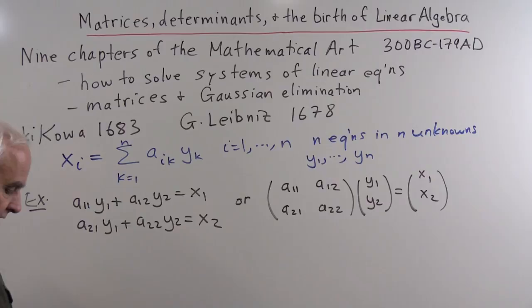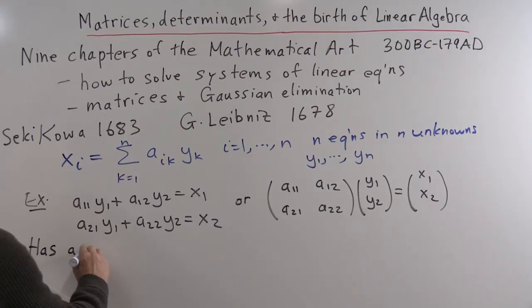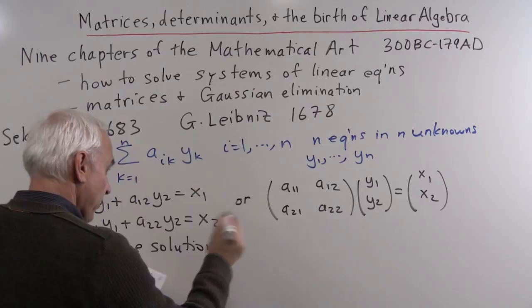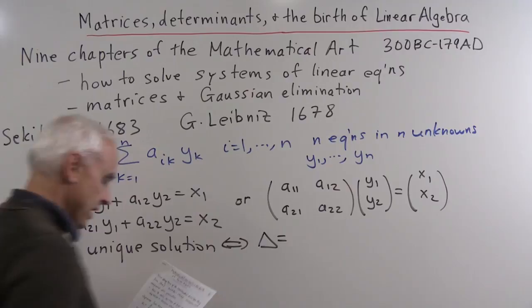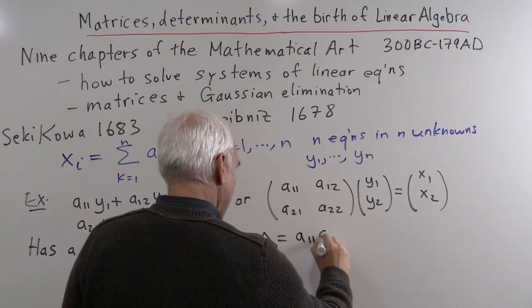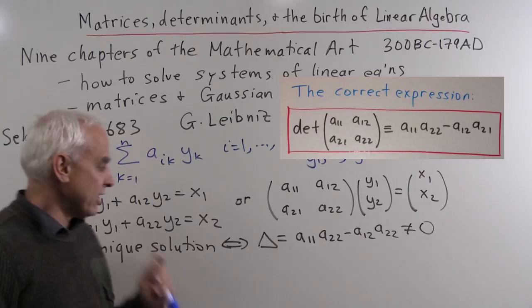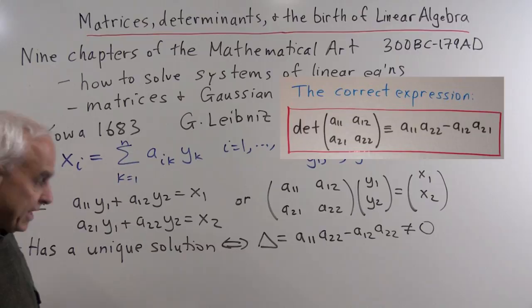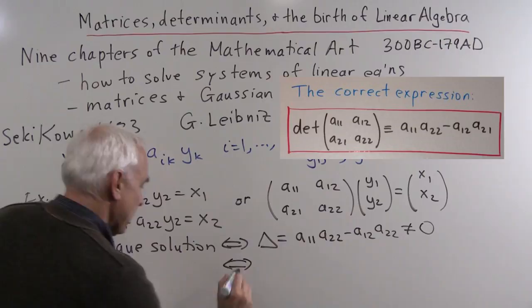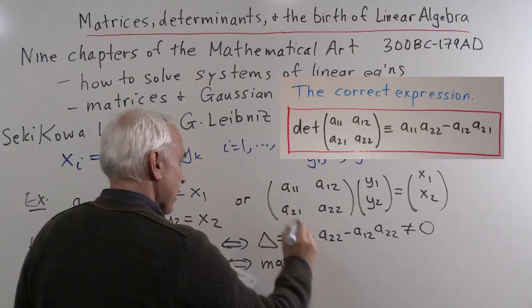The fundamental fact about this is that this system has a unique solution — in other words, we can solve for the Y's precisely when a certain number, let's call it delta, is non-zero. That number is A11 times A22 minus A12 times A21. If that number is non-zero, then we can solve for Y1 and Y2 uniquely. In modern notation, this is precisely when the matrix A is invertible.